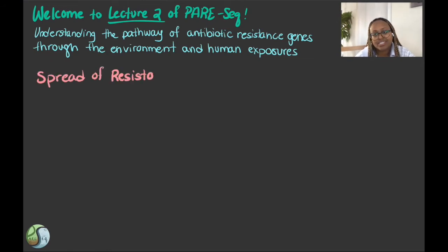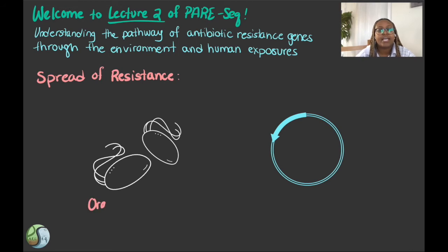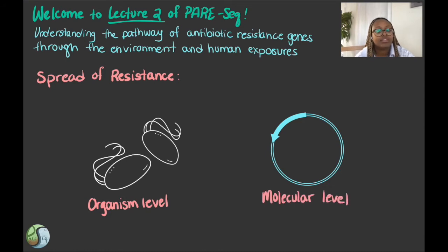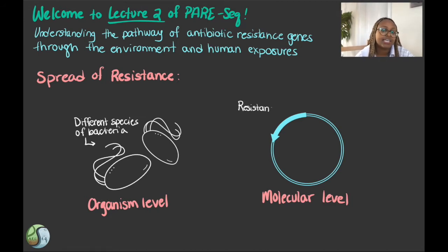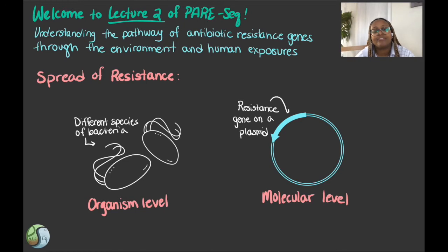In today's video, we will think about spread of resistance from two perspectives: at the organism level, in which bacteria are spread through water, food, soil, and animals, and at the molecular level, with DNA molecules carrying resistance genes. We will review how antibiotic use and overuse leads to selection pressure for resistant bacteria. Then we will talk about how a One Health context helps us understand why environmental spread of resistant bacteria is a public health threat. By the end of this video, we hope you better understand why it is important to study antimicrobial resistance in the environment.